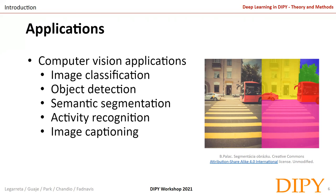In image classification, we get an image and want to recognize what type it is — whether a plane, a dog, a car, or whatever. In object detection, we detect the objects contained in an image and localize them within it. In semantic segmentation, rather than labeling the entire image with a single category, we want to understand the class of every pixel of the image.